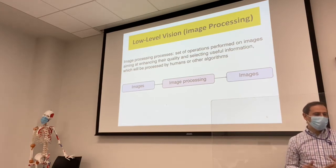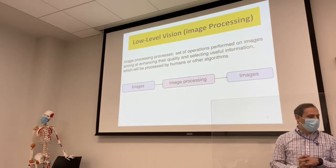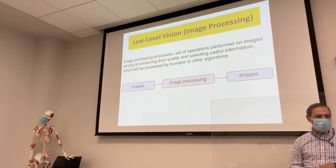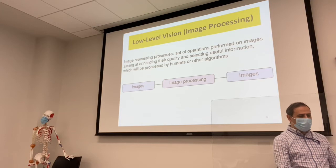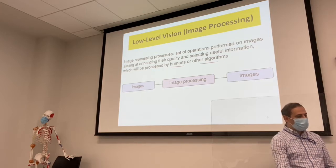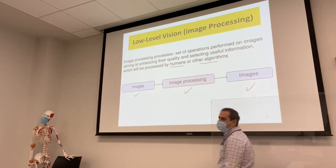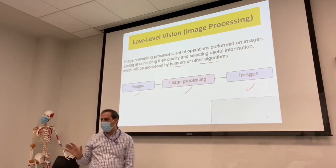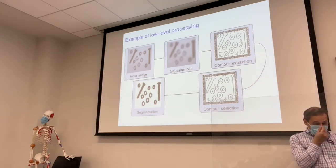So we have low-level, medium-level, and high-level processing. When you talk about low-level, which is image processing, it's a signal operation performed on an image aiming to enhance the quality and select useful information, which will be processed by a human or other algorithms. Someone needs to look at the image, modify it a little bit, and then process it. You start with an image, do image processing, and you're still looking at the same image — for example with different blurriness applied.